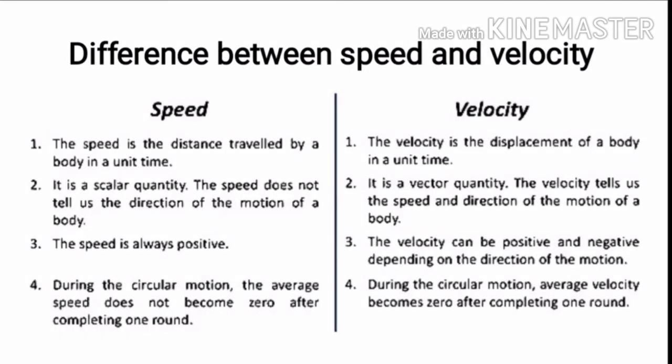Difference between speed and velocity. Speed is the distance travelled by a body in a unit time. It is a scalar quantity. Speed does not tell us the direction of the motion of a body. Speed is always positive. During circular motion, the average speed does not become zero after completing one round. Velocity is the displacement of a body in a unit time. It is a vector quantity. Velocity tells us the speed and the direction of the motion of a body. Velocity can be positive or negative depending on the direction of motion. During circular motion, average velocity becomes zero after completing one round.